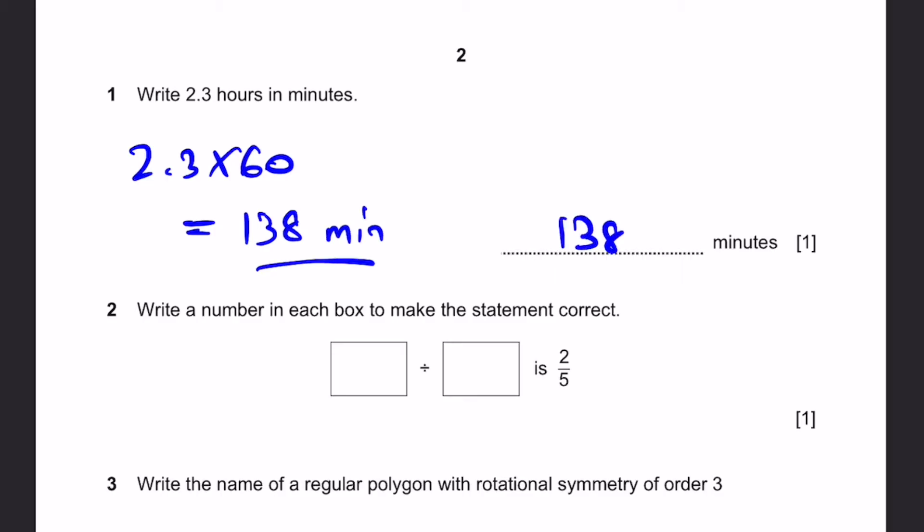Question 2. Write a number in each box to make the statement correct. Dash divided by dash is 2 by 5. You can see the fraction is 2 by 5, so we can obviously write it as 2 divided by 5 is 2 by 5. We can also write 4 divided by 10 or 6 divided by 15, but I'm just writing 2 by 5. This is also correct.